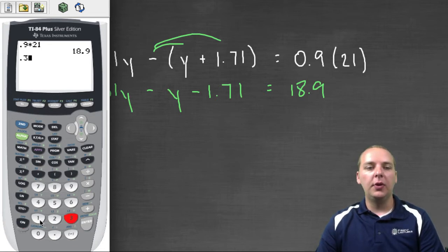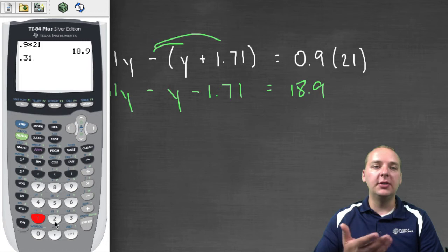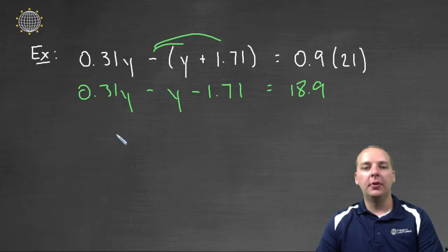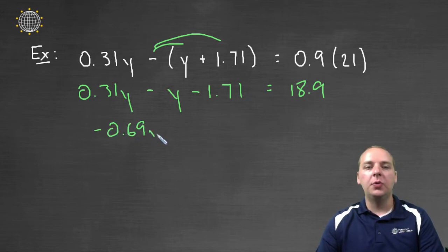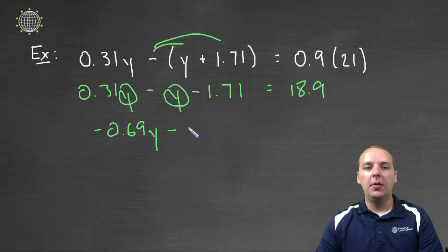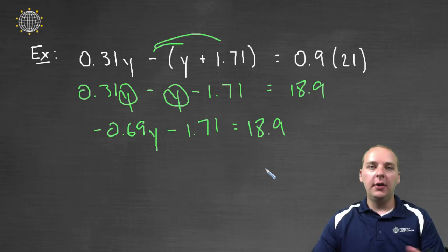And that'll leave us with a total of -0.69 y's when we combine them. So we just understand that we're combining y's, so we just add or subtract the coefficients. Minus 1.71 = 18.9. Very good, we've simplified both sides.